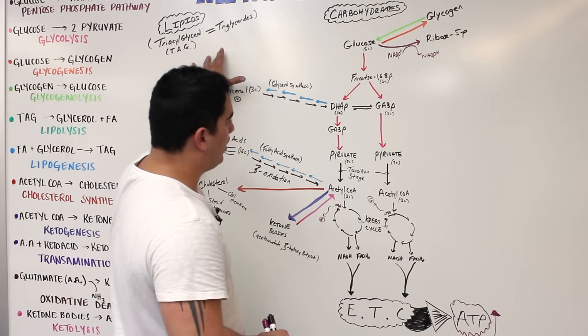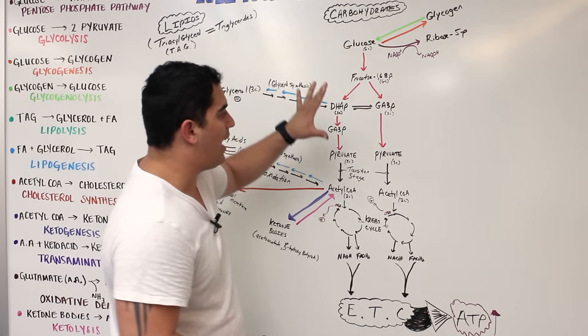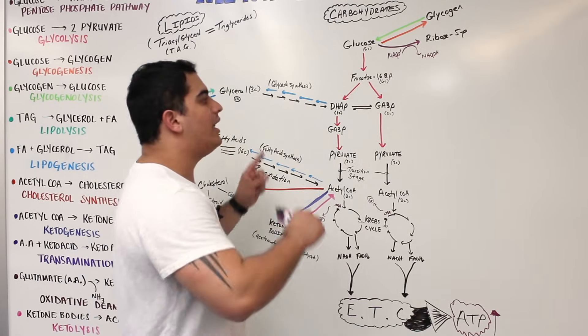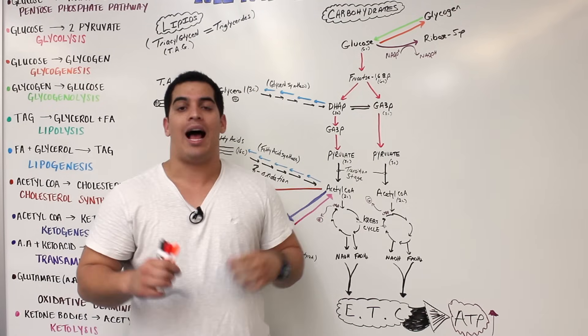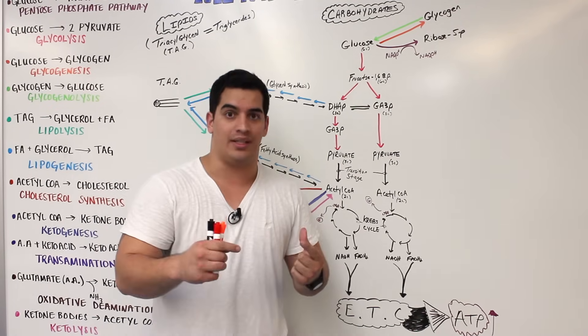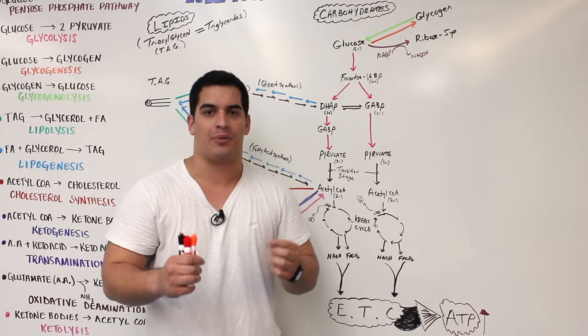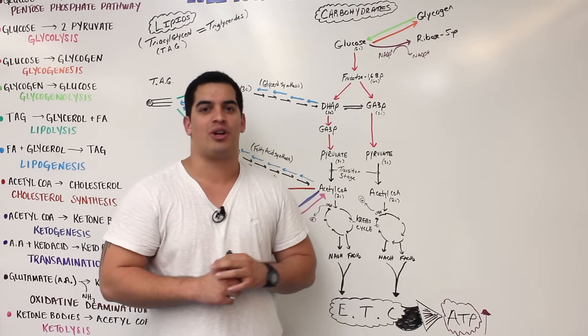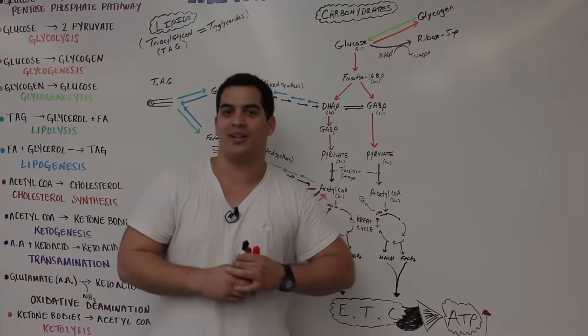In this video we talked about how lipids are integrated into the whole metabolic map pathway. In the next video we'll talk specifically about how proteins and amino acids are involved in this pathway, and then we'll finish up with gluconeogenesis.